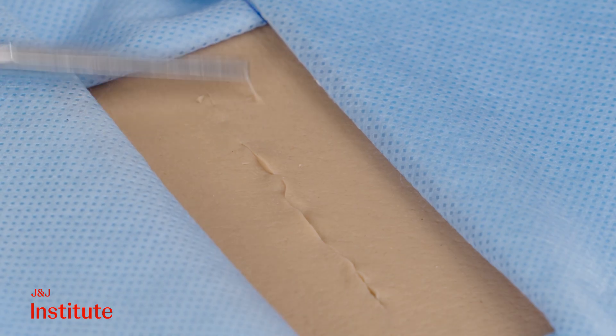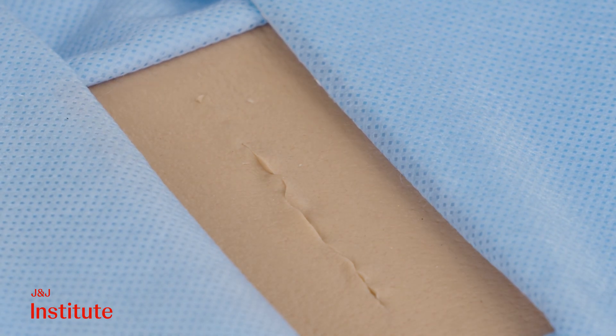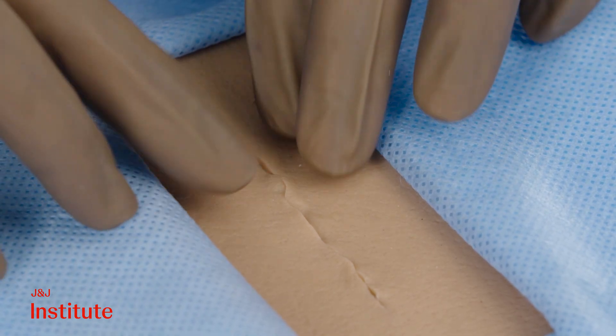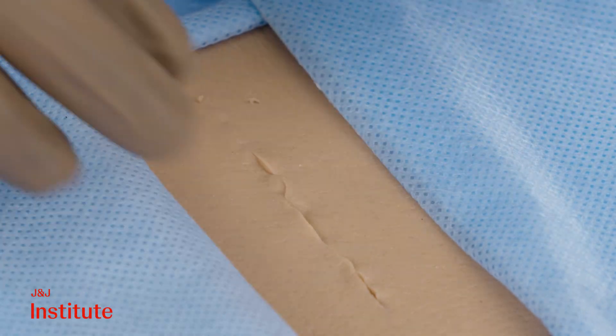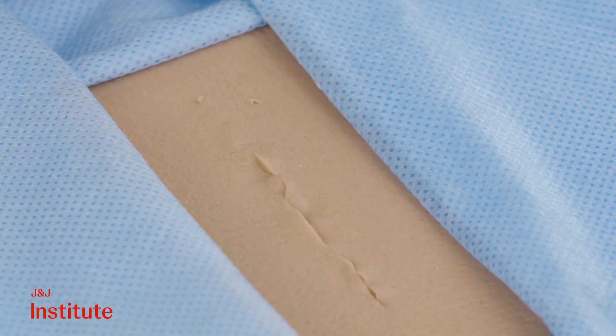The suture is then trimmed flush with the skin. The spiral design of the suture streamlines closure, ensuring optimal wound edge apposition and eliminates the need for knots.